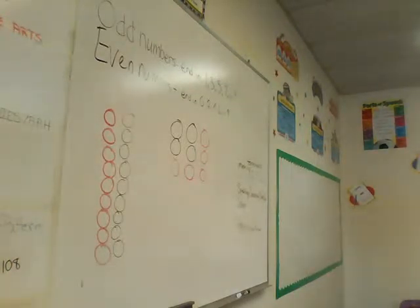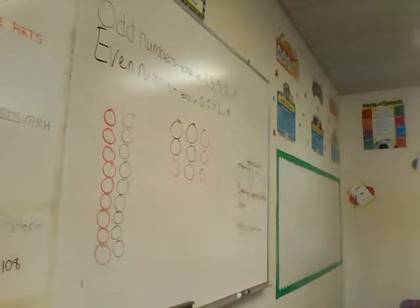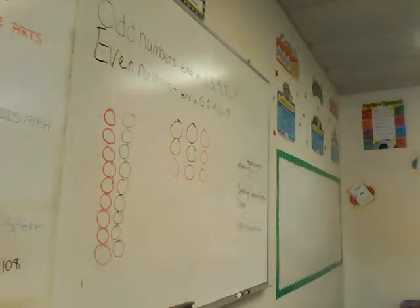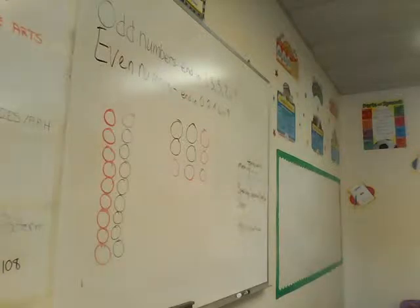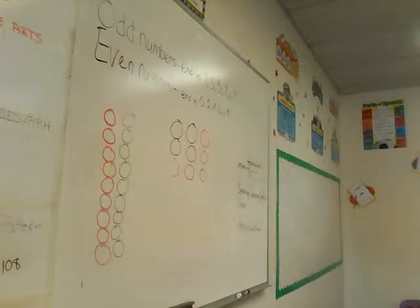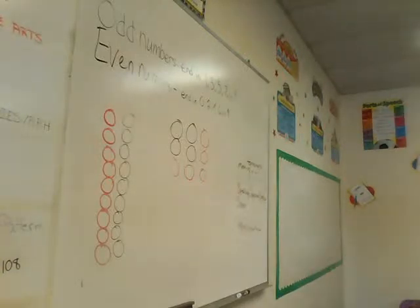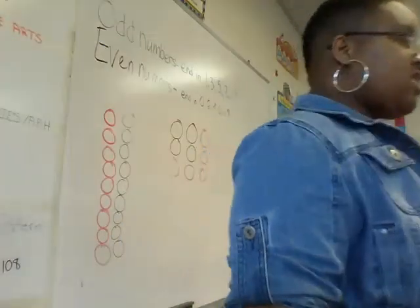So if I added one more counter — Timothy, why is it odd now? It's nine, and nine is an odd number. Why is nine an odd number though? It ends in nine. Good job. Any questions thus far?